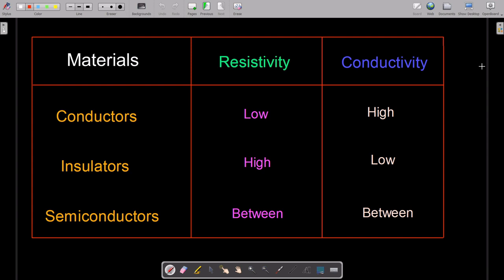Hello dear students, welcome to lecture 3 of this course on semiconductors. This will be a very short video where, as you can see on the screen, we'll discuss the difference between conductors, insulators, and semiconductors. As we saw in our last lecture, we dealt with two particular terms: resistivity and conductivity.